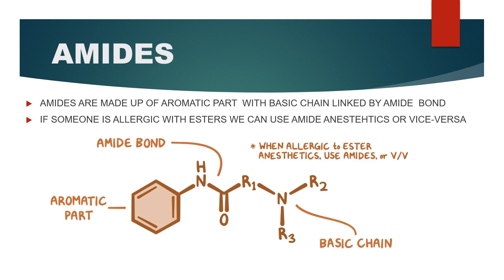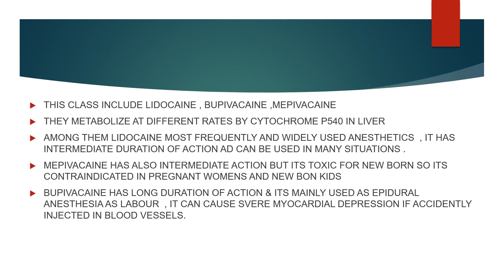Amide anesthetics are made up of an aromatic part and a basic chain linked by an amide bond. When someone is allergic to the ester anesthetics, we can use the amides, or vice versa. This class of local anesthetics includes lidocaine, mepivacaine, and bupivacaine, among others, and they're metabolized at different rates by cytochrome P450 enzymes in the liver.